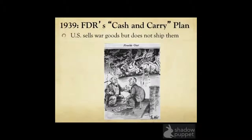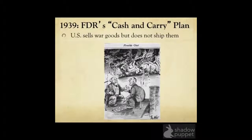After World War II broke out, President Roosevelt argued for the revision of trade laws and the Neutrality Acts to avoid the loss of merchant ships and allow the US to trade war goods with Great Britain while remaining neutral. The Cash and Carry plan was passed as a revision of the Neutrality Act of 1939. The US could sell war goods to nations at war, but could not ship them — nations at war had to pay for goods up front, and loans were not allowed. This did actually favor Great Britain, which is one of the reasons Roosevelt supported it.